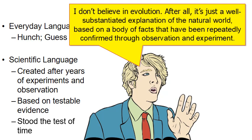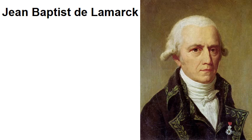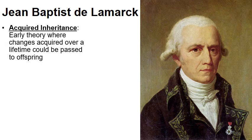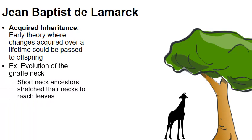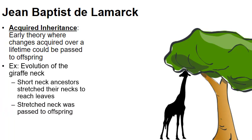Transitioning to some early work leading up to where we are today — Jean-Baptiste de Lamarck developed a theory called acquired inheritance. Today this is not an acceptable scientific theory, but at the time it was believed that traits acquired during an organism's lifetime could be passed on to offspring. As Lamarck explained it, one common example was the evolution of the giraffe's long neck. He argued that short-necked ancestors, in their struggle to reach treetops for food, began to stretch and stretch their necks, and that the extra-stretched neck would then be passed on to their offspring.